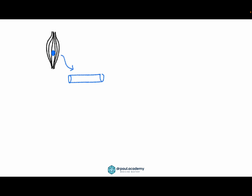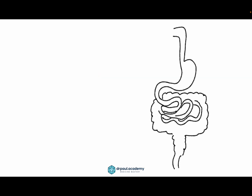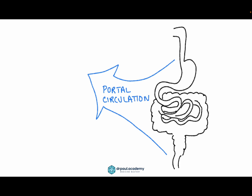Generally, when you inject a drug intramuscularly, it slowly seeps into the systemic circulation and gets mixed with it — so from the site of administration, the drug moves directly into the systemic circulation. But not all routes work this way. For example, when you give a drug through the enteral route — that is, through the gastrointestinal system — the drug gets absorbed into the portal circulation.